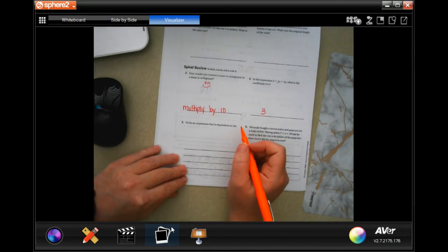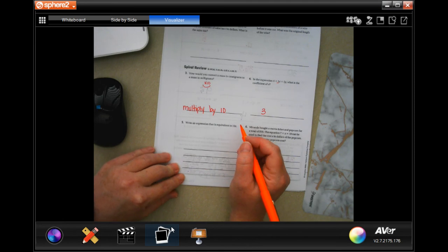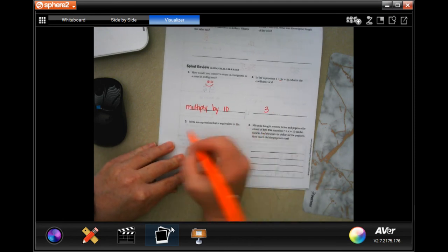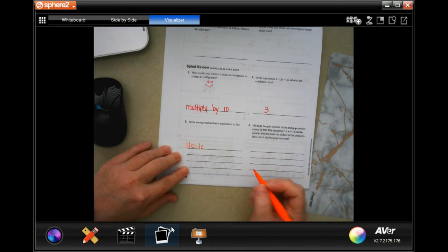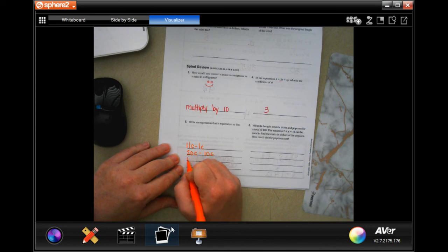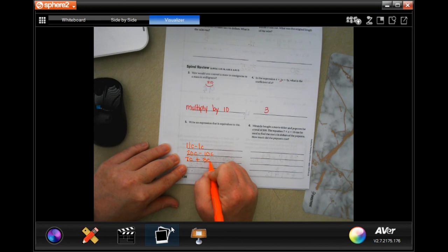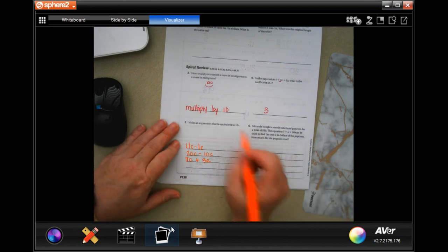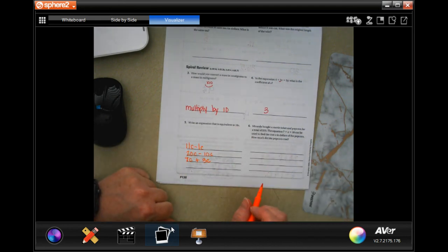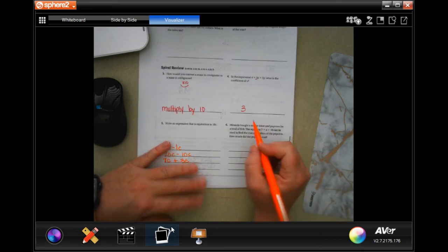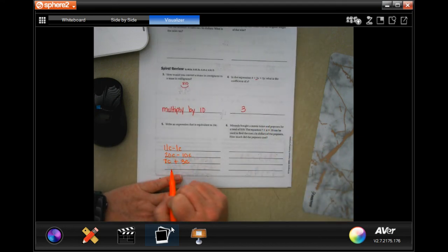You could do any number of things, guys. You could do 11C minus 1C. You could do 20C minus 10C. You could do 7C plus 3C. You could do any number of things as long as it ends up with 10C. Any of those is fine as long as your answer would be 10C.